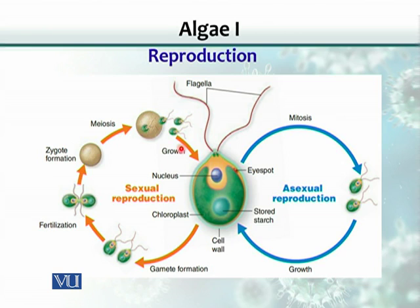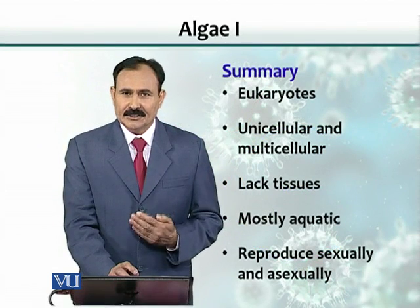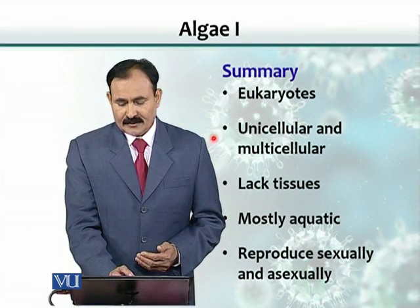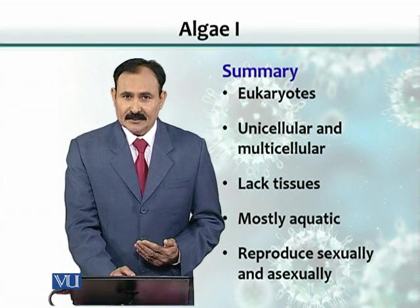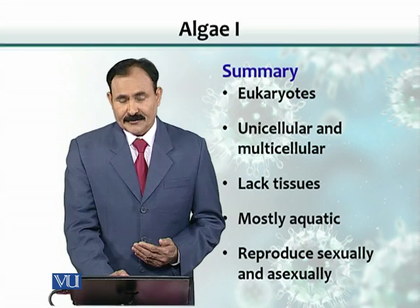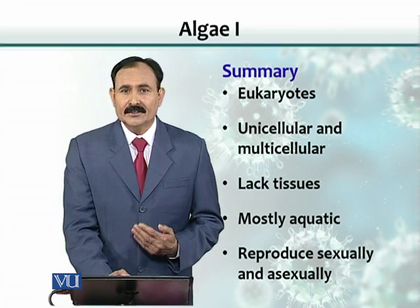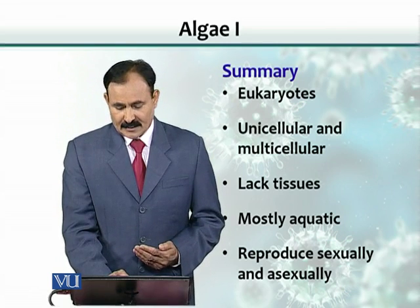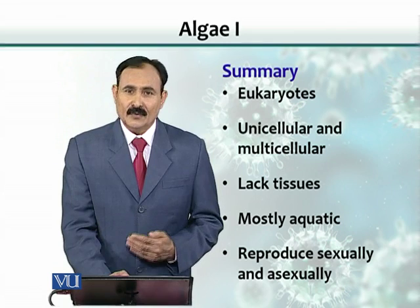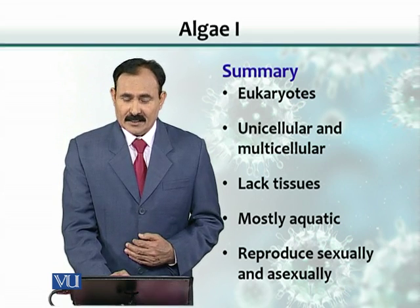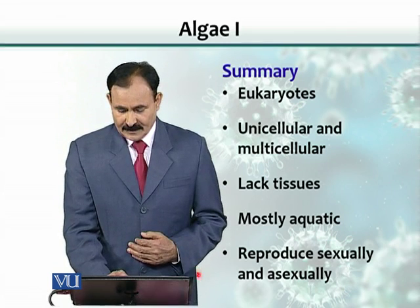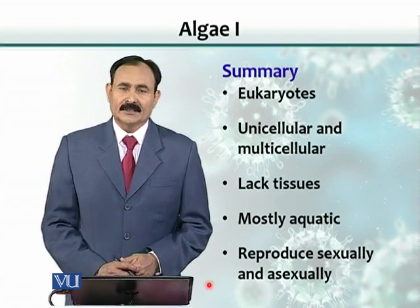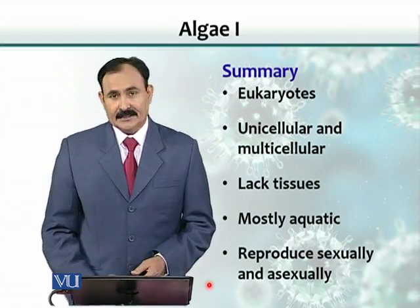In summary, algae are eukaryotes. They could be unicellular or multicellular, and they lack typical tissues as seen in plants. Mostly they are aquatic, found in water bodies, and they can reproduce sexually as well as asexually.